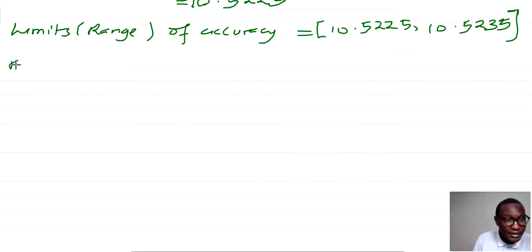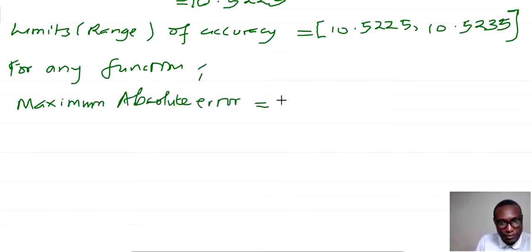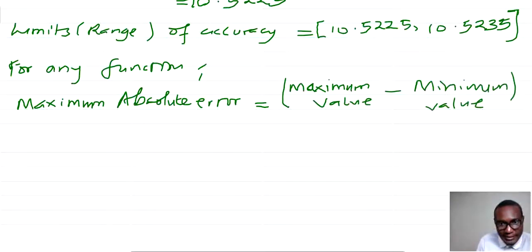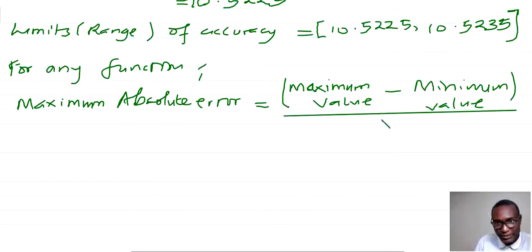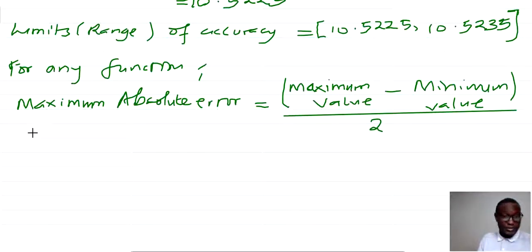For any function, the maximum absolute error is equal to the maximum value minus the minimum value, everything divided by 2. Now, if it is a function, how do we get the maximum and minimum? That's the next thing which we are going to look at: maximum and minimum values in addition, subtraction, multiplication and division.